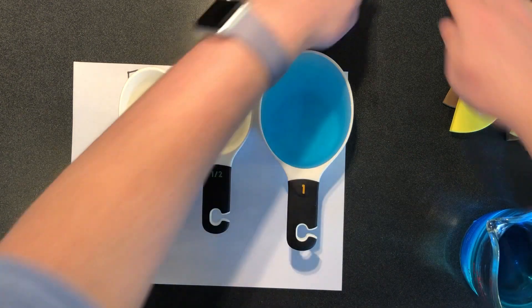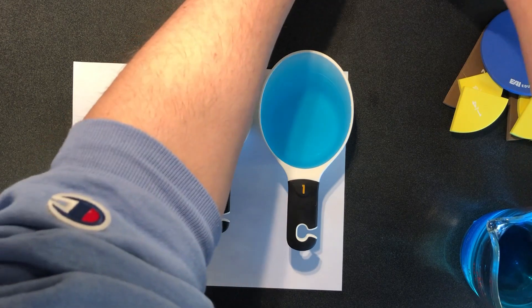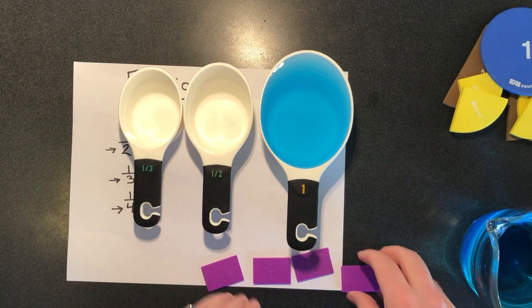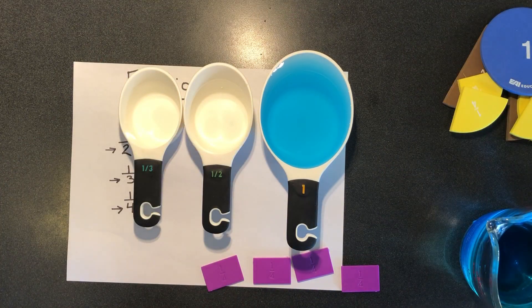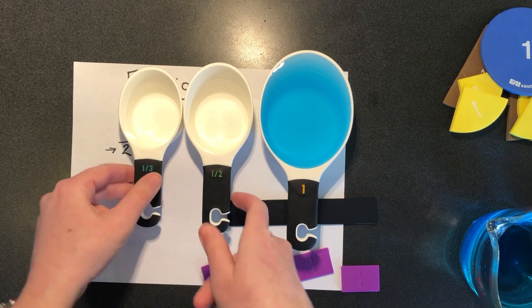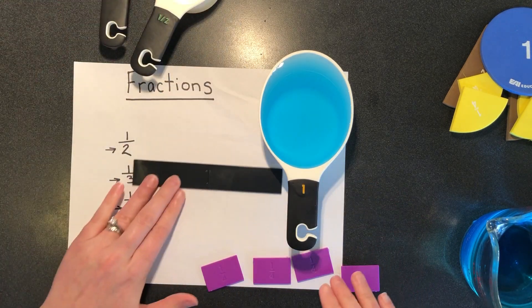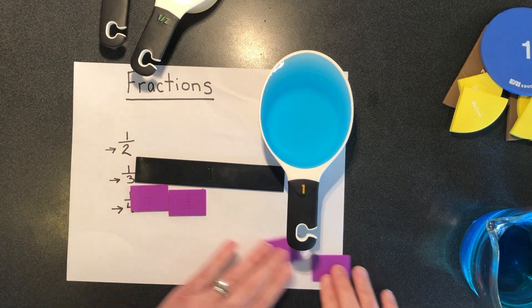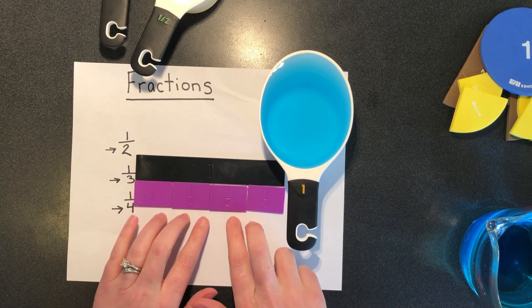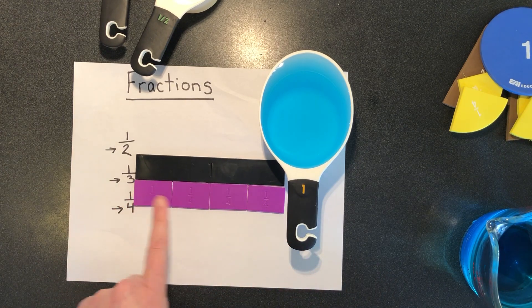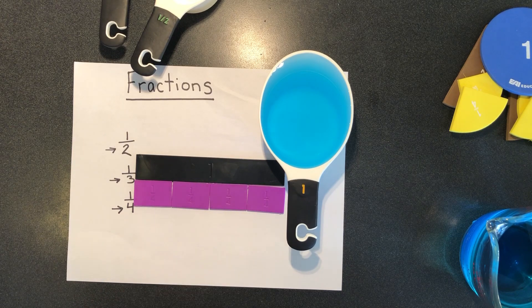And if you think back to our rectangles that makes sense because that was my hole and these were my one fourths. So I did the one fourth four times to get to one hole.